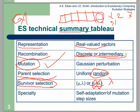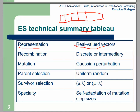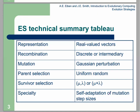Lambda represents the number of children and mu represents the number of parents. Mu plus lambda means for the next generation we select from both parents and children. When written as mu comma lambda, it means we select only from children. The key speciality and most important part of ES is self-adaptation, which is a property of mutation that can increase the power of ES.